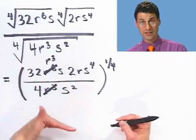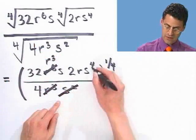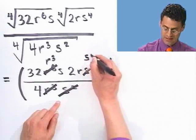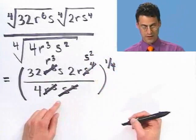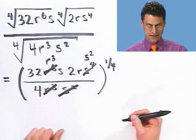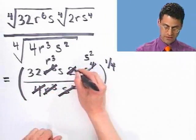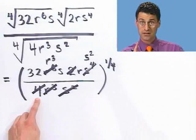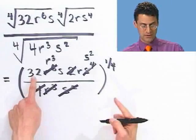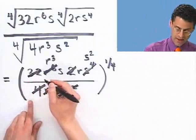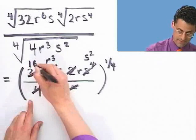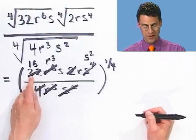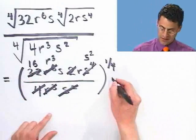I also cancel s terms: s to the fourth on top with s squared on the bottom leaves s squared on top. Then I cancel the 4 on the bottom with the 2 in the numerator, and that reduces 32 to 16.